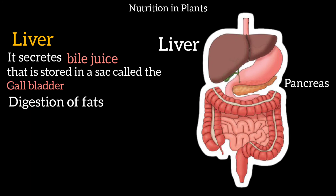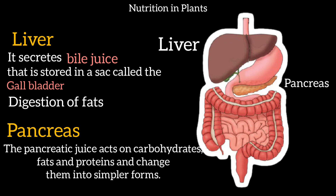The pancreas secretes pancreatic juice. The pancreas acts on carbohydrates, fats, and proteins and converts them into simpler forms. So the pancreatic juice helps to digest all three major food components.